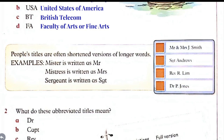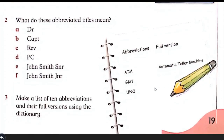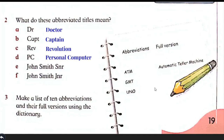Here are some abbreviations of some words. Question number two: what do these abbreviated titles mean? We use or see these abbreviations in our daily routine life. 'DR' for doctor. 'CAPT' for captain. 'REF' for referee. 'PC' for personal computer. 'John Smith Sr.' and 'John Smith Jr.' Question number three: make a list of ten abbreviations and their full variants using the dictionary. If you don't have a dictionary, you can use the internet — find out the full variant of GMT and UNO.